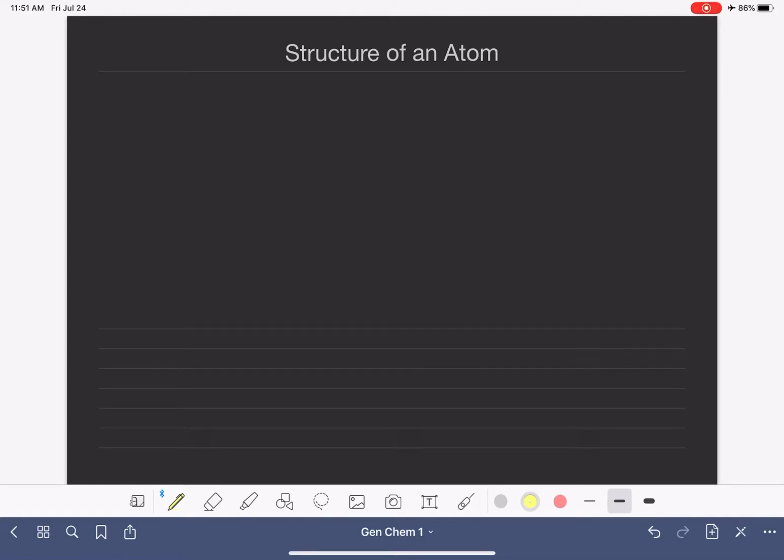Atoms are made up of three types of particles: protons, neutrons, and electrons.